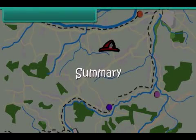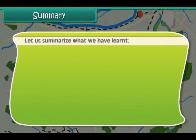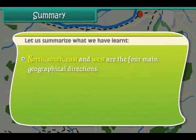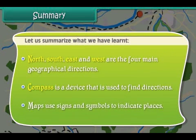Let us summarize what we have learned. North, south, east, and west are the four main geographical directions. A compass is a device that is used to find directions. Maps use signs and symbols to indicate places.